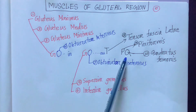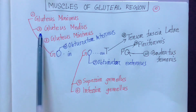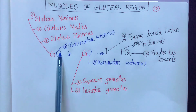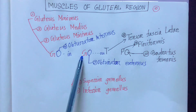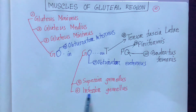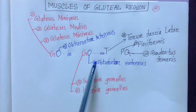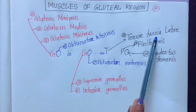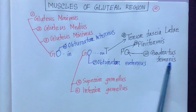To recap: GO IN GO OUT P Q. G is for gluteus maximus, gluteus medius, gluteus minimus. O in — obturator internus. GO OUT: G is for superior gemellus and inferior gemellus; O is for obturator externus. You can see obturator internus and obturator externus. T is for tensor fascia lata, P is for piriformis, Q is for quadratus femoris.